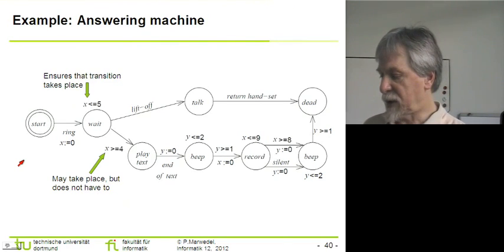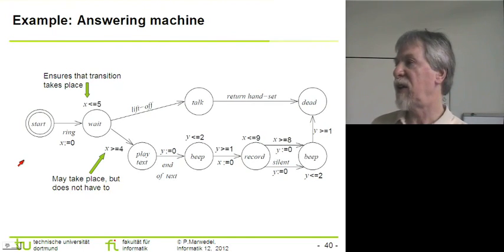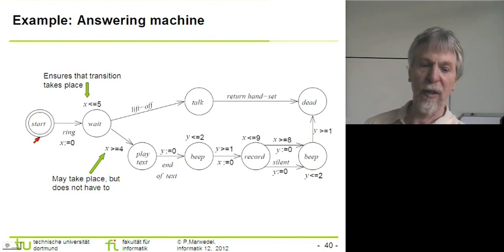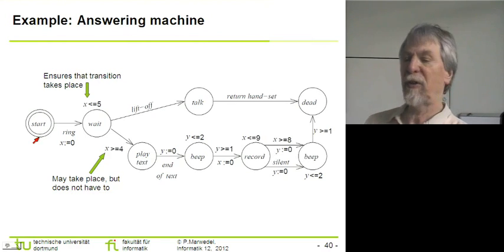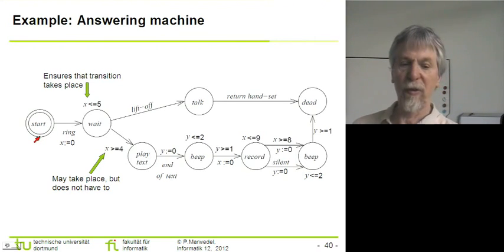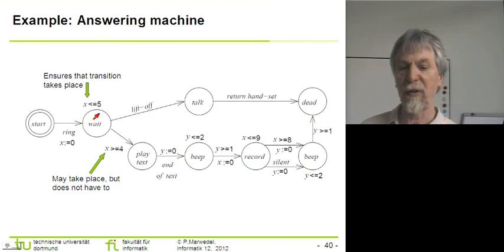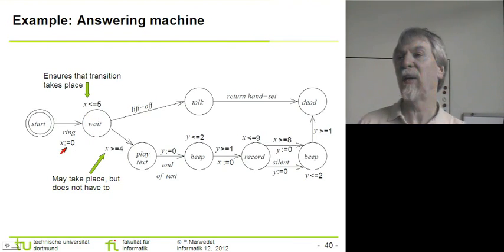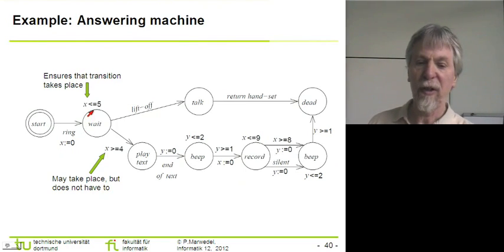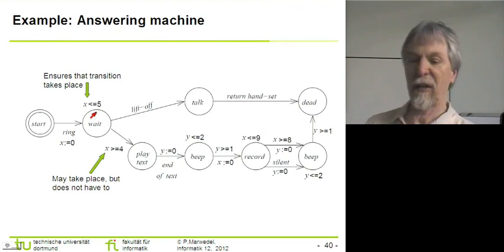Using this model of timed automata I can describe an application. I'm using this answering machine as an example. We start at a starting state, denoted with two circles to make it special. When there's a ring signal we transition to the waiting state and reset our clock to 0. In the waiting state we cannot exceed time 5, so after time 5 we have to be at some other state.